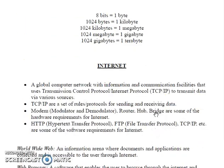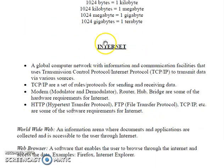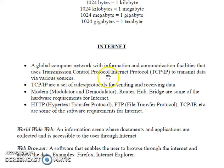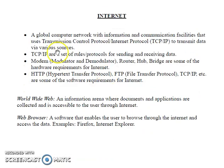Now let's move on to internet. Internet is a global computer network with information and communication facilities that uses Transmission Control Protocol and Internet Protocol for transmitting data via various sources. TCP/IP are a set of rules, or protocols, for sending and receiving data.